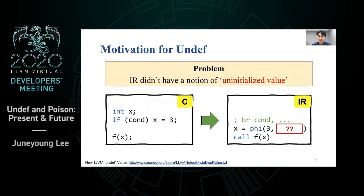Long ago, LLVM could not do this optimization because it did not have a value in IR that represents uninitialized. This was an important blocker because many optimizations are done in IR programs. IR is a language tailored for compiler optimizations, especially using SSA form. The SSA construction via mem2reg inserts a phi node after the if block. When cond is true, the phi becomes 3, but when cond is false, what should the value be?